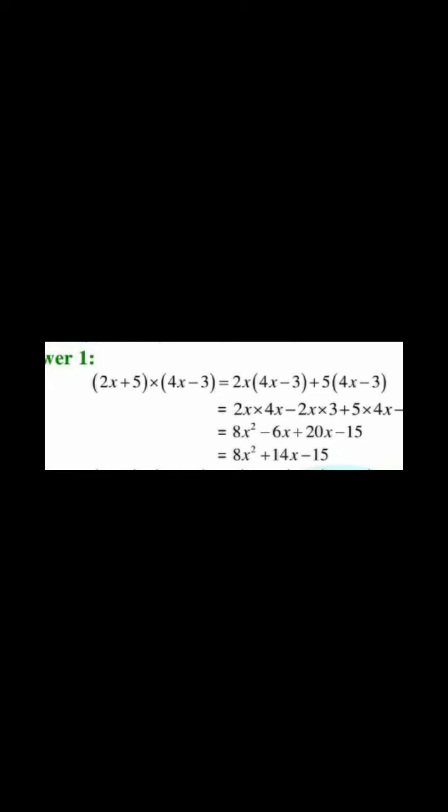Look carefully what we have done over here. First we took 2x, so it is the multiplication of 2x with both the terms of 4x minus 3. If still you do not understand, what you can do is just erase 5.